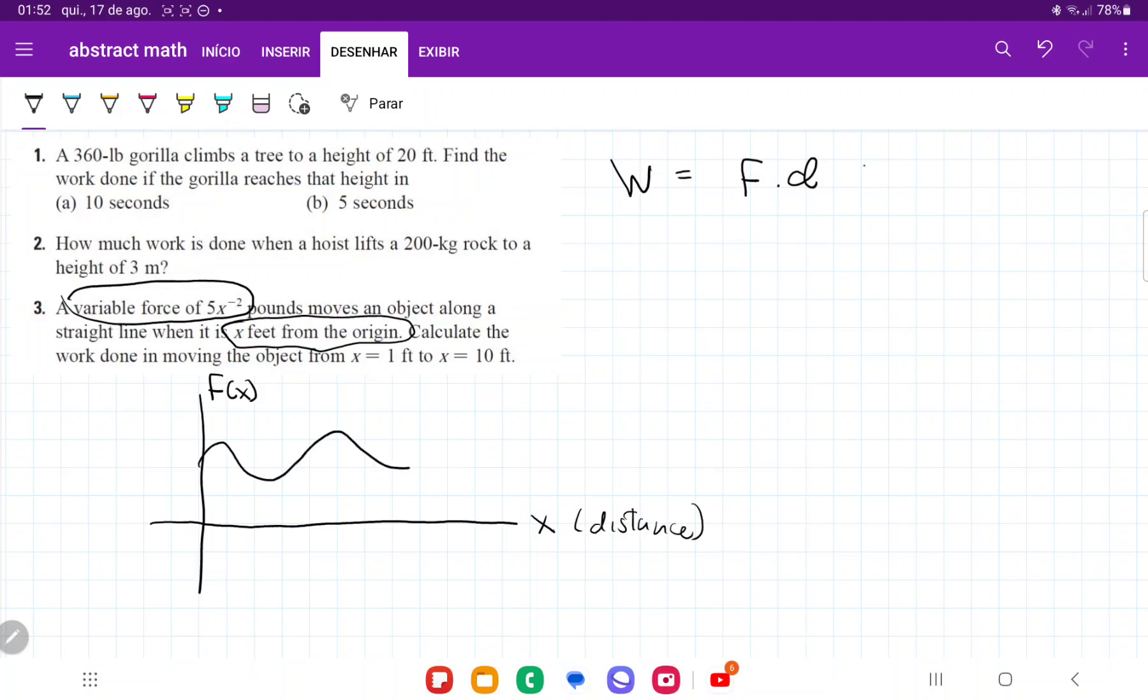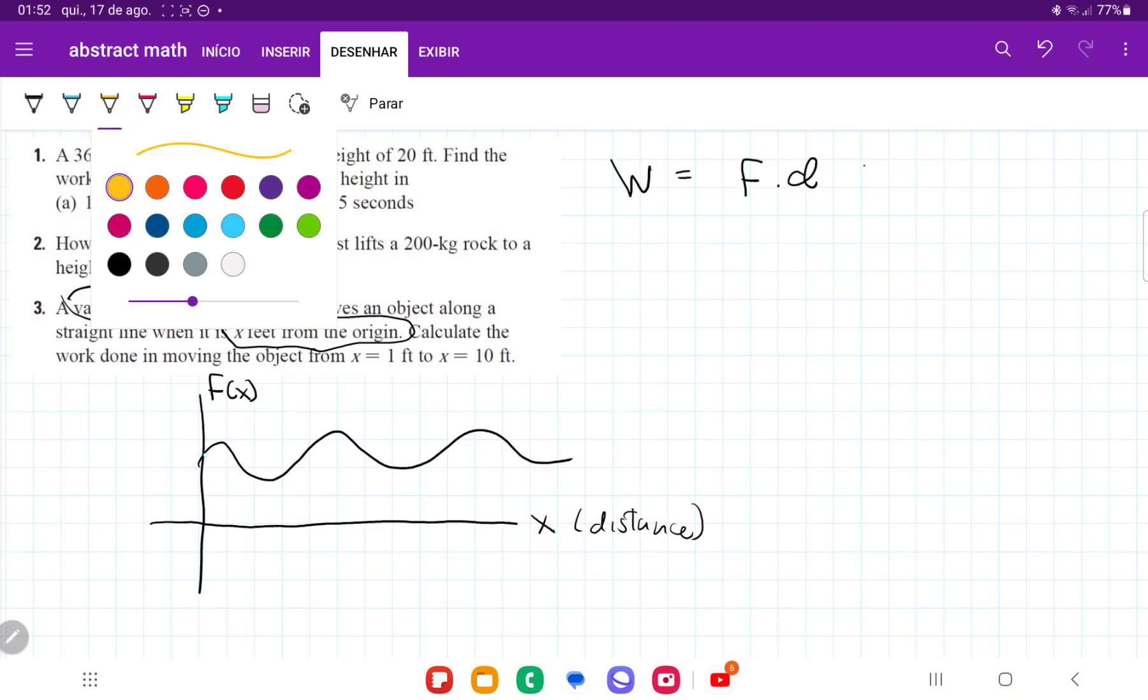So if we were to take a random variable force that goes like this, we can see that the work is going to be force times distance. So it's going to be base times height. But we can't do base times height because the height is constantly changing.